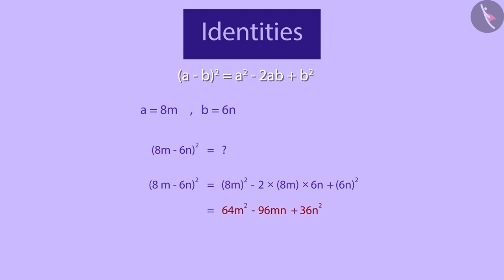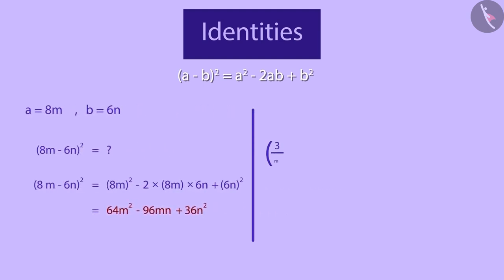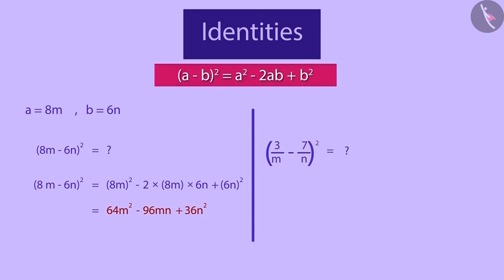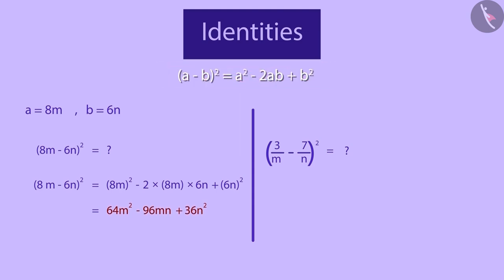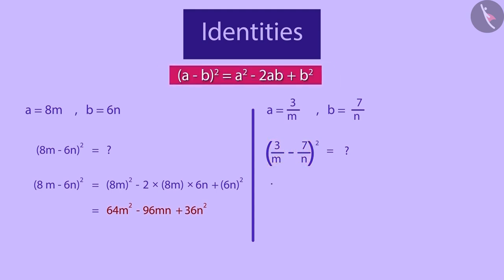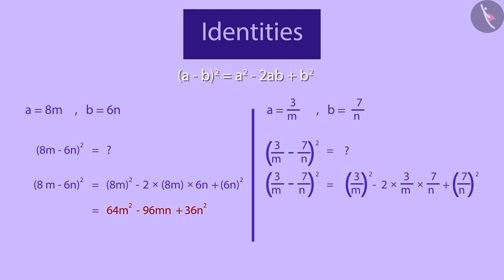Now, let's look at one more example. Can you find the value of 3 by m minus 7 by n raised to the power of 2? We know that we will have to use the same identity here. Here, we will consider a as 3 by m and b as 7 by n. Substituting these values in the identity, we will get this. Simplifying it further, we will get this as our final answer.